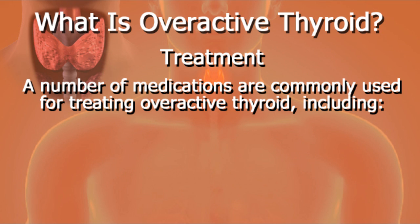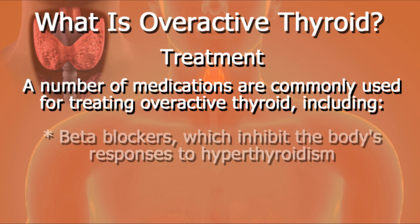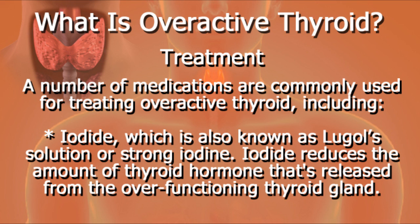A number of medications are commonly used for treating overactive thyroid, including beta blockers, which inhibit the body's responses to hyperthyroidism, and iodide, also known as Lugol's solution or strong iodine. Iodide reduces the amount of thyroid hormone that's released from the over-functioning thyroid gland.